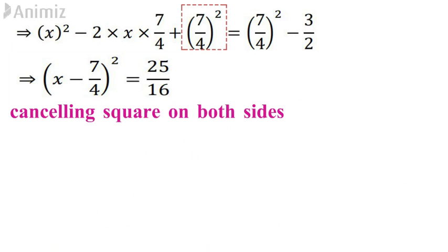So this can be rewritten as (x - 7/4)² = 25/16. Now you cancel square on both sides. So you will be getting x - 7/4 = ± 5/4.